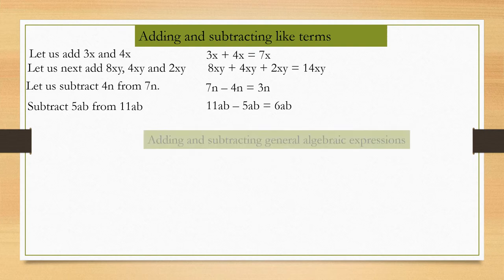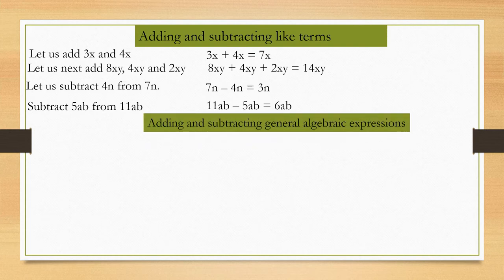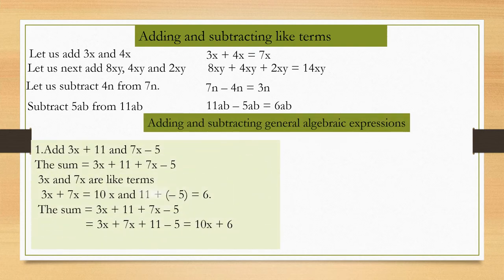Adding and subtracting general algebraic expressions. First question: add 3x plus 11 and 7x minus 5. The sum equals 3x plus 11 plus 7x minus 5. Since 3x and 7x are like terms, we combine them to get 10x. The constant terms 11 and negative 5 give positive 6. Therefore, the sum is 10x plus 6.